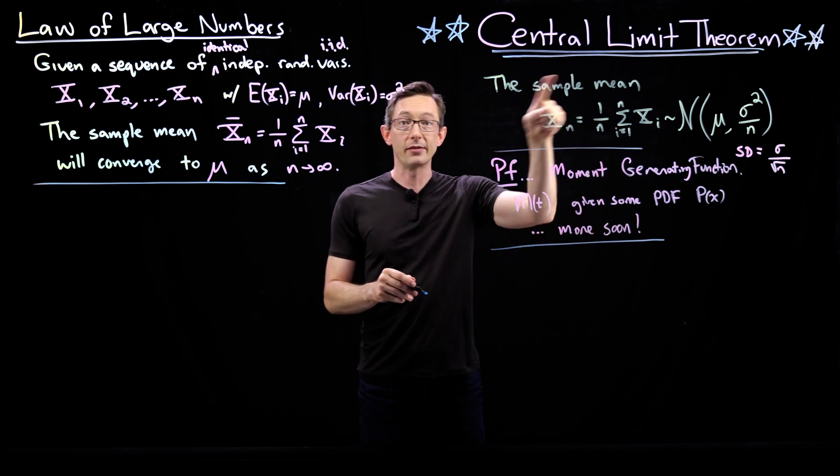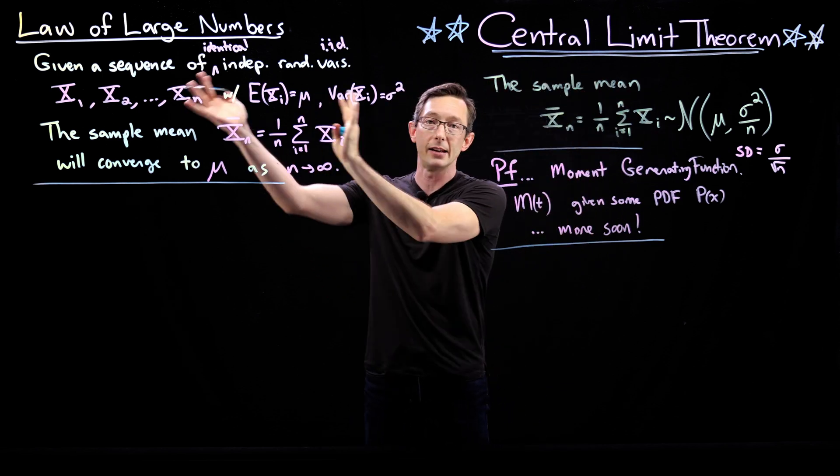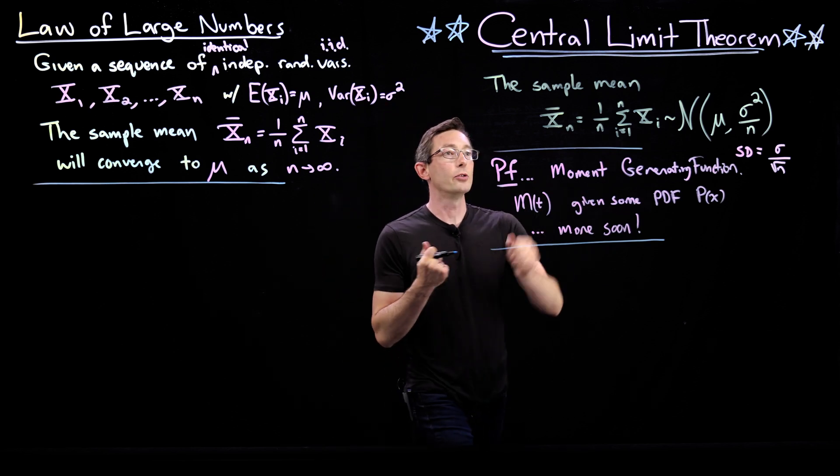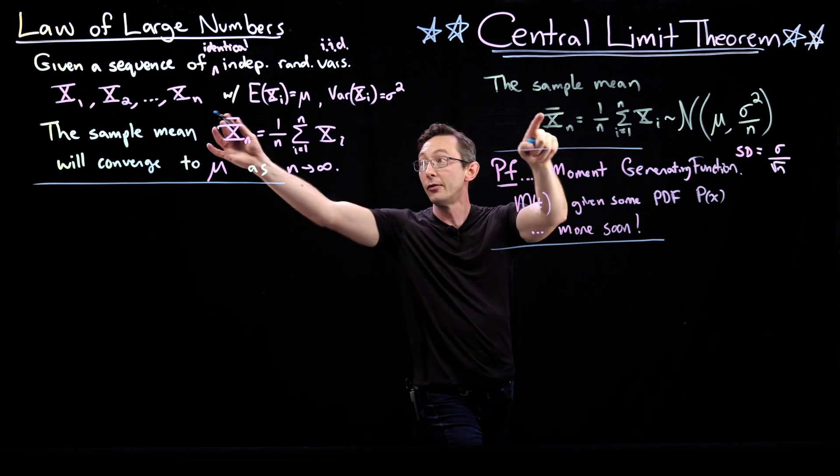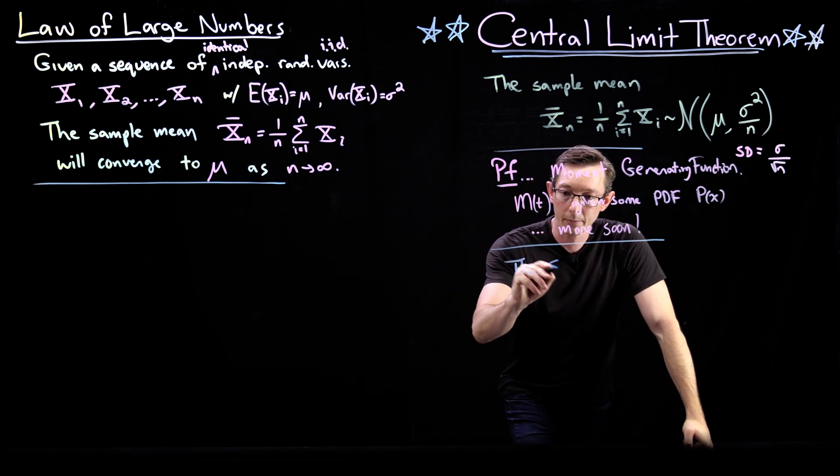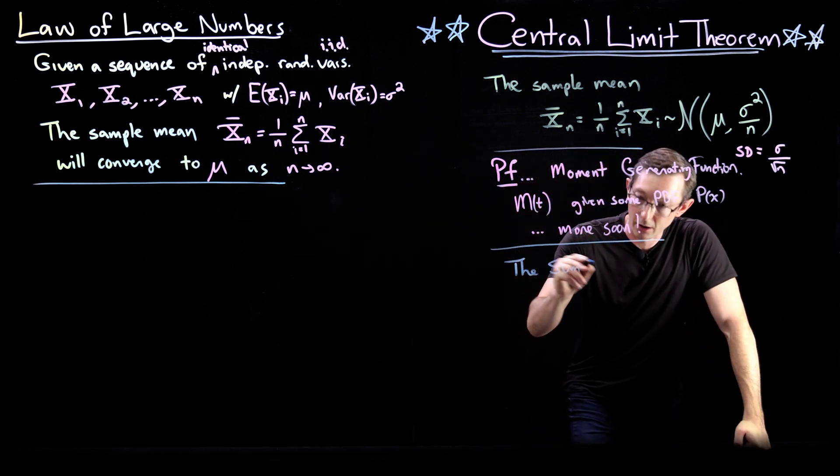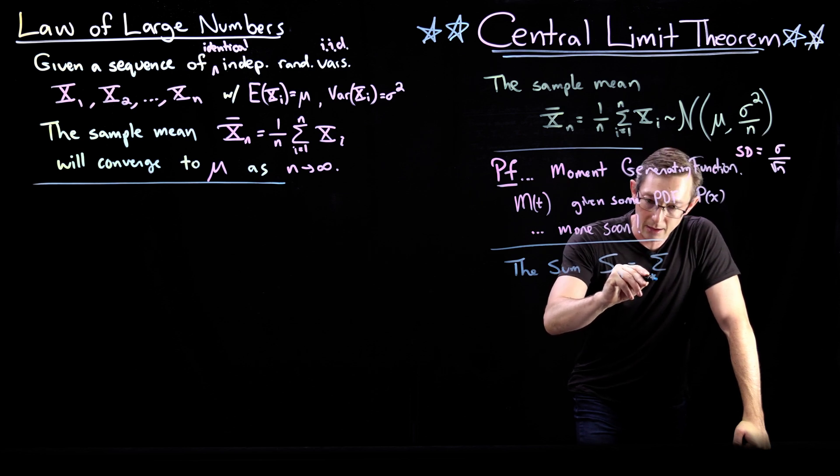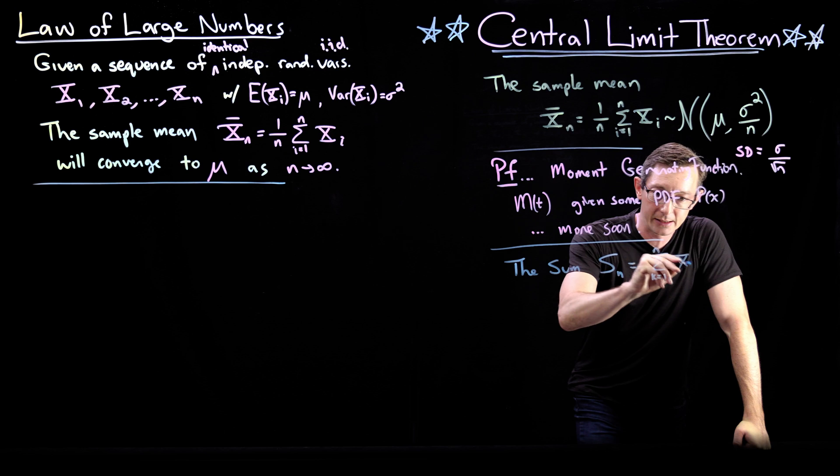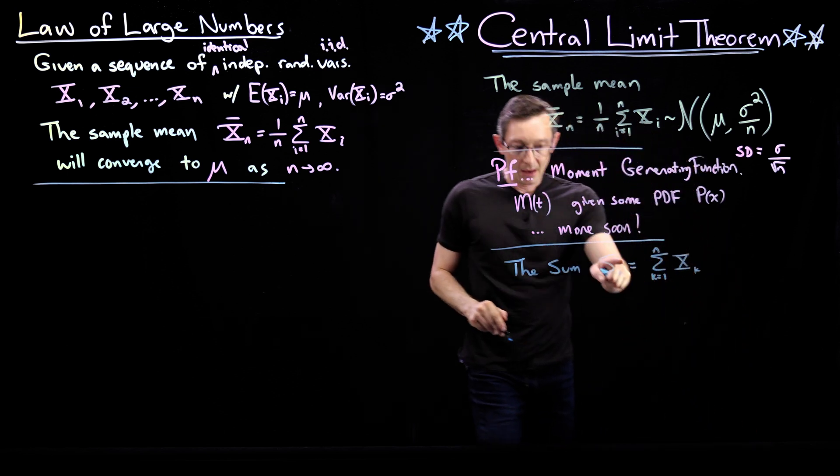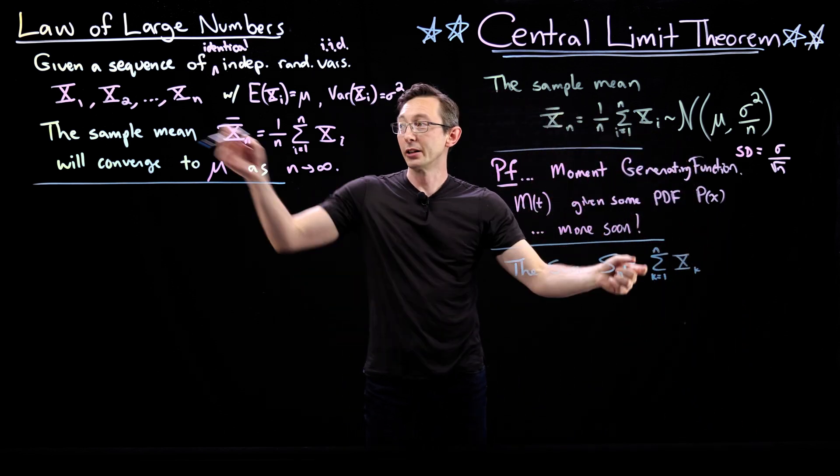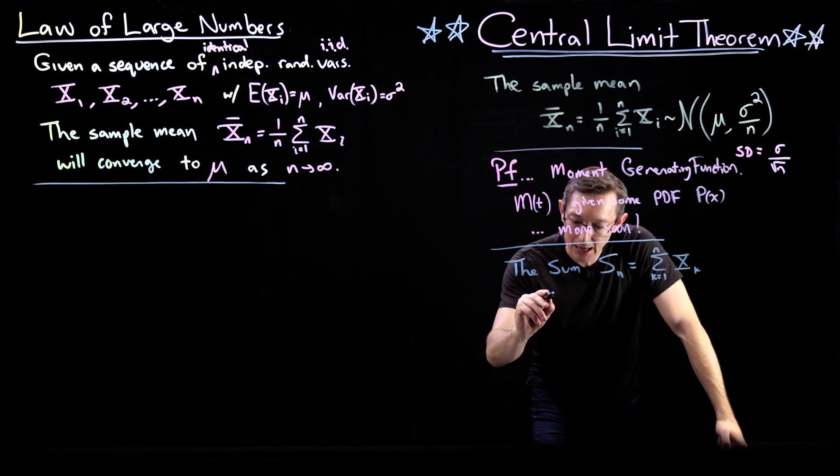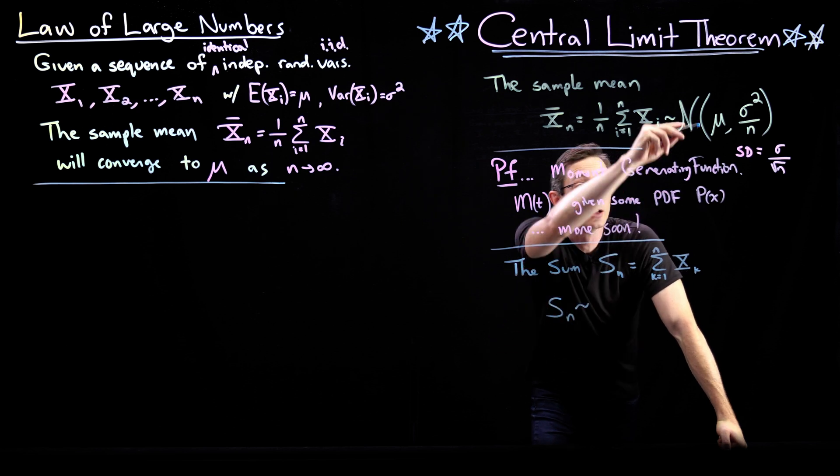This is one statement in terms of the sample mean, and I chose to write it this way because this connects to the law of large numbers. There is another way of writing it where you could say that just the sum of all of these variables, the sum, we'll call it S N equals just sum from K equals one to N of X K. So I'm not dividing by N. I'm not taking the average. I'm literally just adding up all of these random variables.